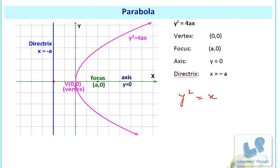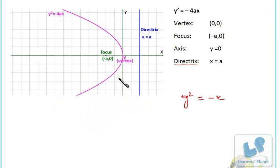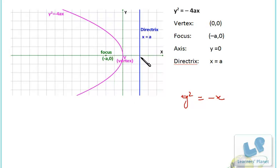For the parabola y squared equals minus x, the graph opens in the opposite direction compared to y squared equals x. The focus is at (minus a, 0) and the equation of the directrix is x equals a, since the vertex is the midpoint. So y squared equals x opens to the right and y squared equals minus x opens to the left.